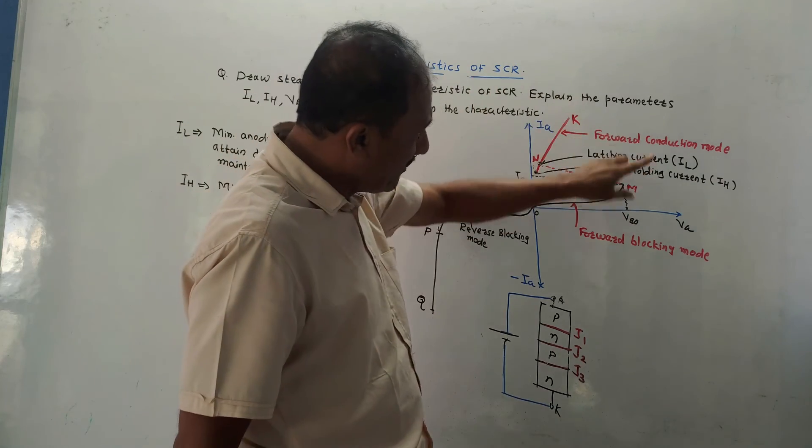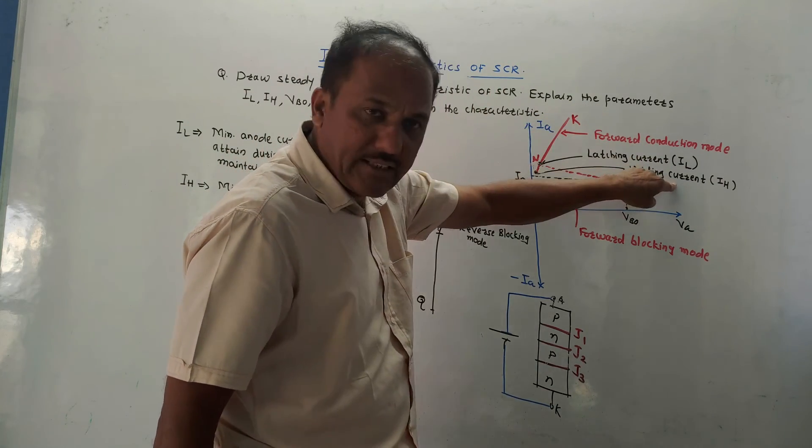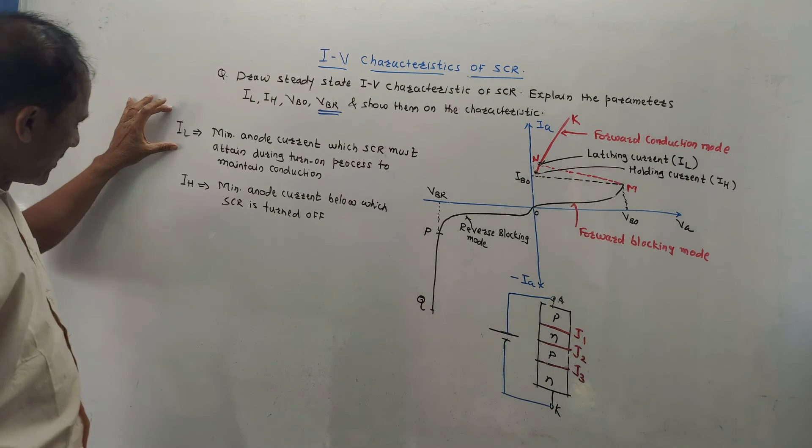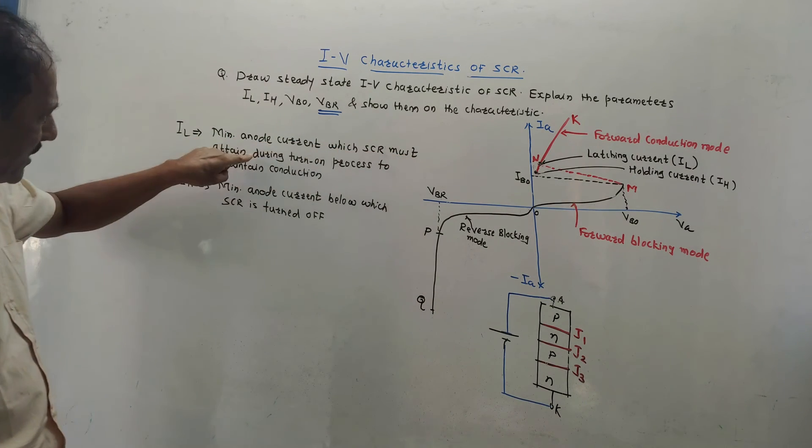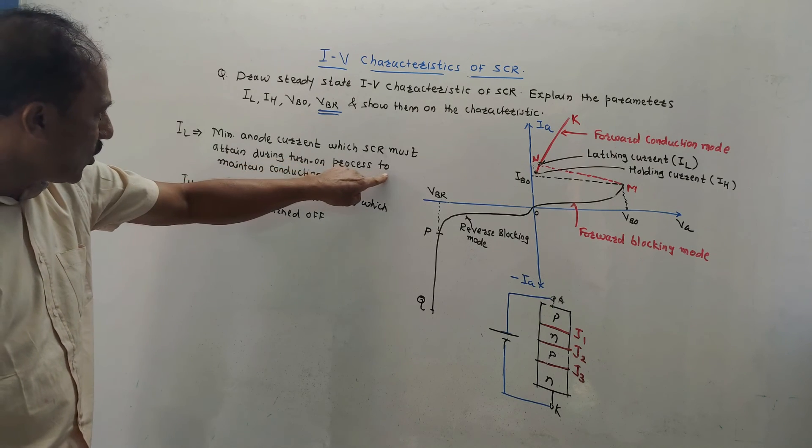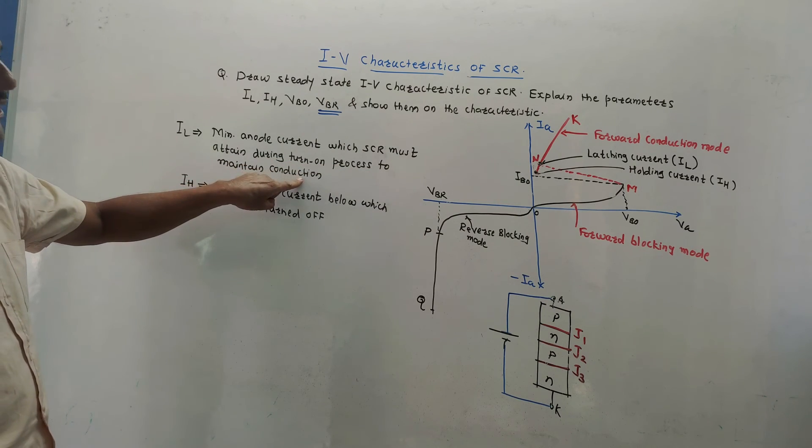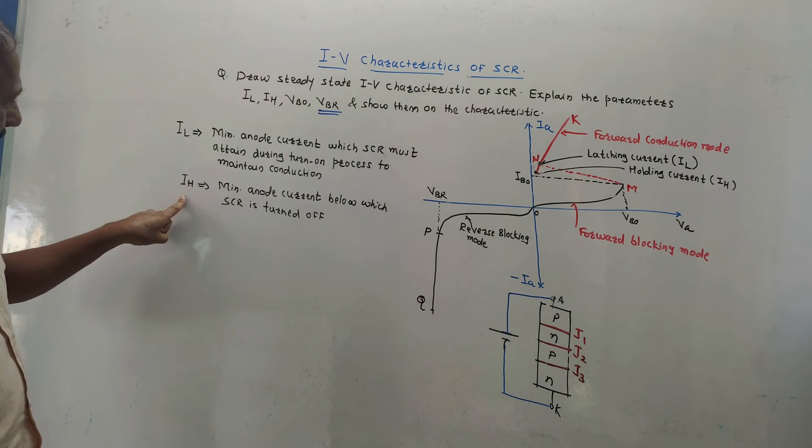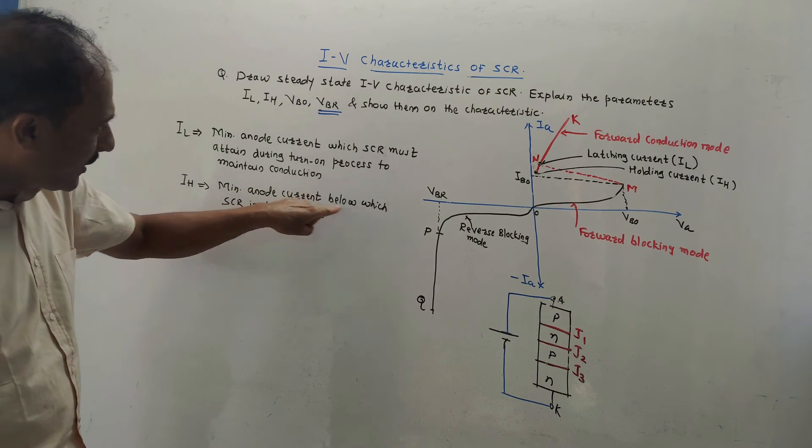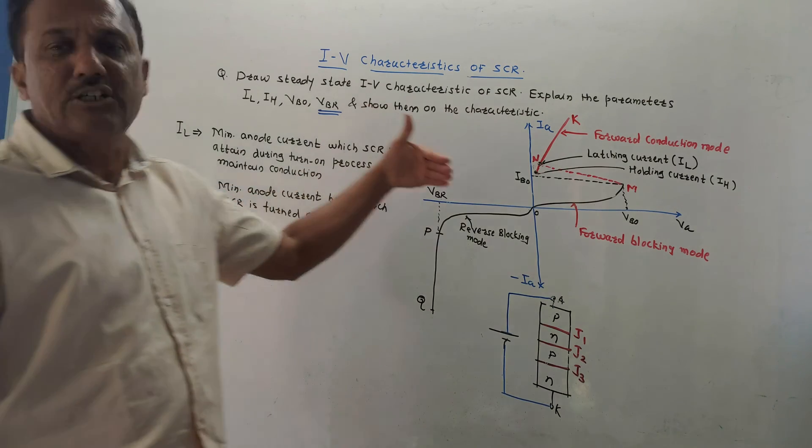Now there are another two important parameters. One is latching current and another is holding current. The latching current IL is the minimum anode current which SCR must attain during turn-on process to maintain the condition. So it is the minimum current in order to maintain the condition for the SCR. Next is IH, that is the holding current. It is the minimum anode current below which SCR is turned off.